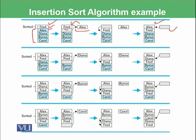In the second step, Alex and Fred are sorted and Diana, Byron, and Carol are unsorted. We pick Diana, the first element from the unsorted list, put it in the temporary location, and start comparing with Alex. The D in Diana is compared with the A in Alex, and it's found that D has greater ASCII code as compared to A. This means Diana is greater than Alex.